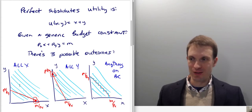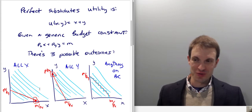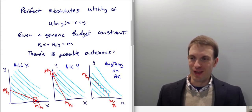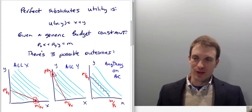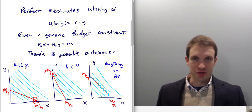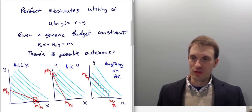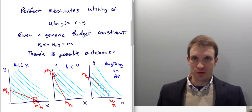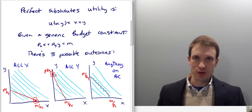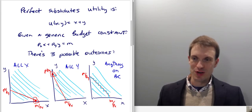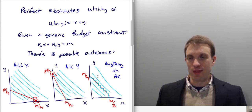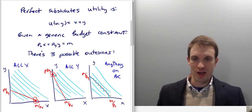The highest indifference curve that crosses the budget constraint is going to be the all-X solution, which I call the Alex solution, or the all-Y solution, the Alley solution. When the indifference curves are flatter than the budget constraint, the highest possible indifference curve crosses the vertical intercept of the budget constraint — that's the all-Y solution. And the third case is when indifference curves are coincident with the budget constraint, in which case anything, including the endpoints, would be optimal.